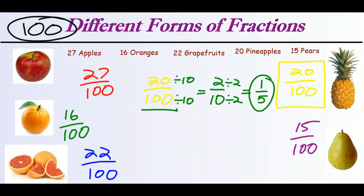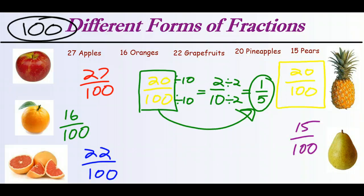1 and 5 don't share any factors — 1 only has the factor 1. So 20 out of 100 represents the same value as 1 out of 5, which is a much easier fraction to understand. It doesn't tell us immediately how many pineapples there are, because there are not 1 pineapple out of 5 fruits — there are 20 out of 100. We would have to know that there are 100 fruit and convert back, but the simplest form of that fraction is 1 fifth.